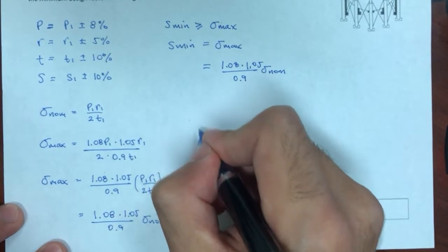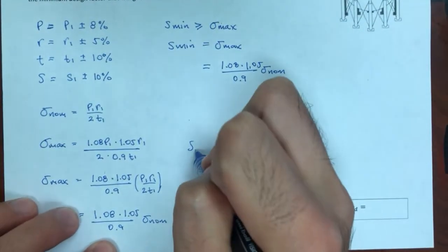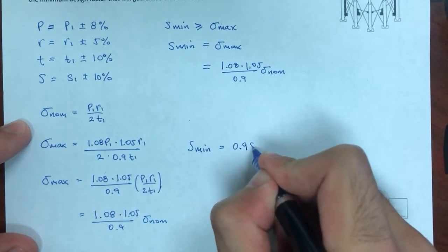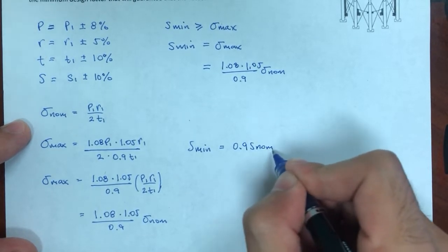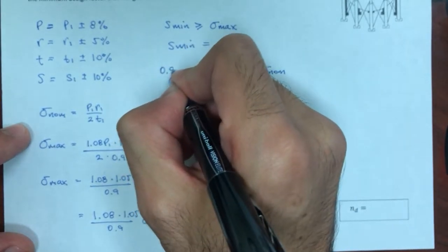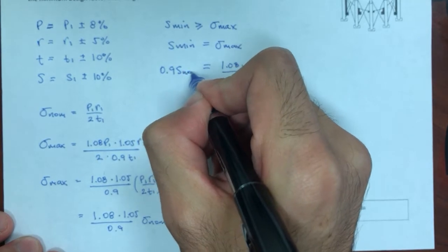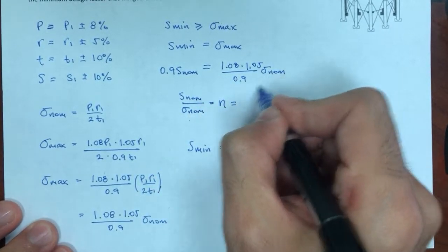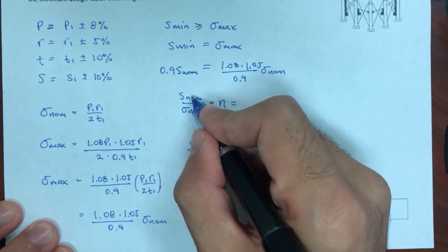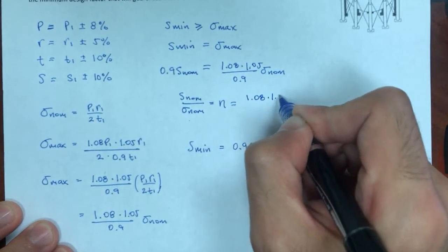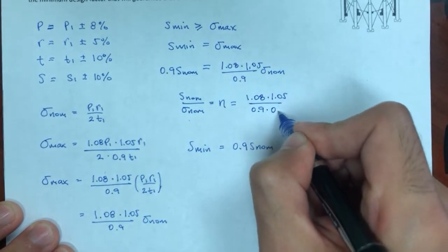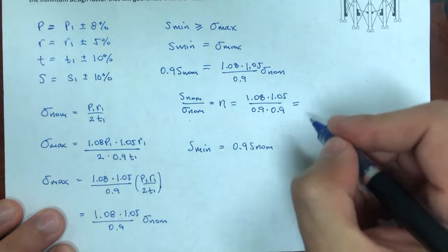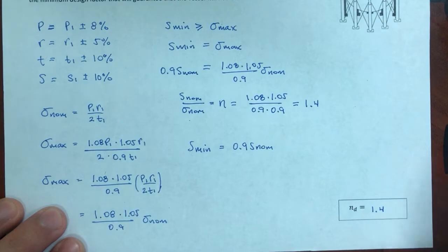By definition, S_nominal over sigma_nominal is my design factor. Setting minimum strength equal to maximum stress: 0.9 S_nominal = (1.08 × 1.05 / 0.9) × sigma_nominal. Dividing both sides by sigma_nominal and by 0.9, S over sigma_nominal equals 1.08 × 1.05 over 0.9 squared. Computing that in the calculator gives exactly 1.4. That is the minimum design factor.